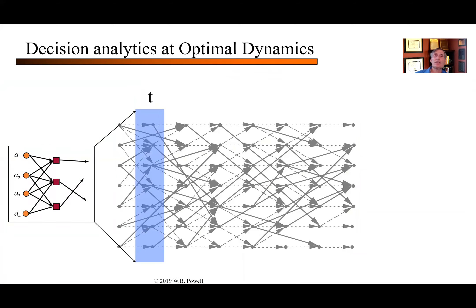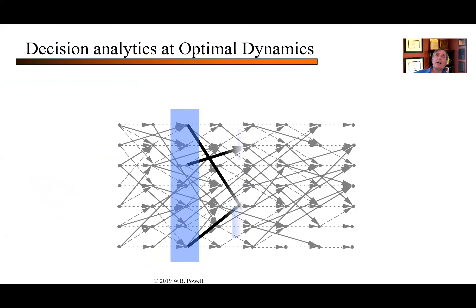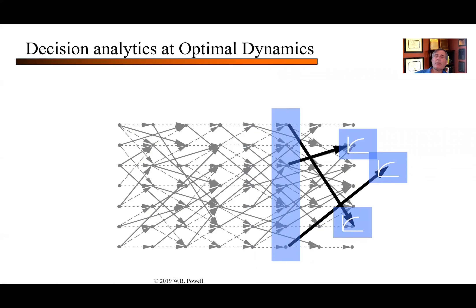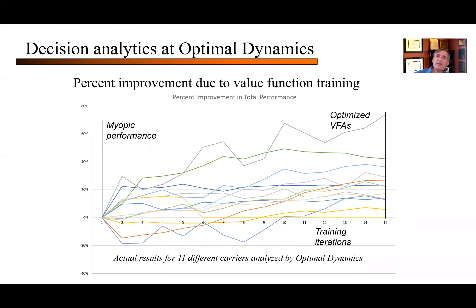I'm the chief analytics officer at Optimal Dynamics. If you go to tinyurl.com/decision-analytics-in-trucking, you can download this technical white paper — it actually has some math in it. Scanning the headings, you'll see we're using all four classes of policies at Optimal Dynamics. When optimizing drivers to loads, we use approximate dynamic programming. When you use these approximate value functions, the problem reduces to a nice linear program that scales to fleets with 1,000 to 10,000 trucks. Here's the load assignment problem — think of all the drivers and loads in that blue circle — with the downstream value function capturing the value of drivers in the future. If we repeat simulations, just like with the energy storage problem, I can learn the value functions.